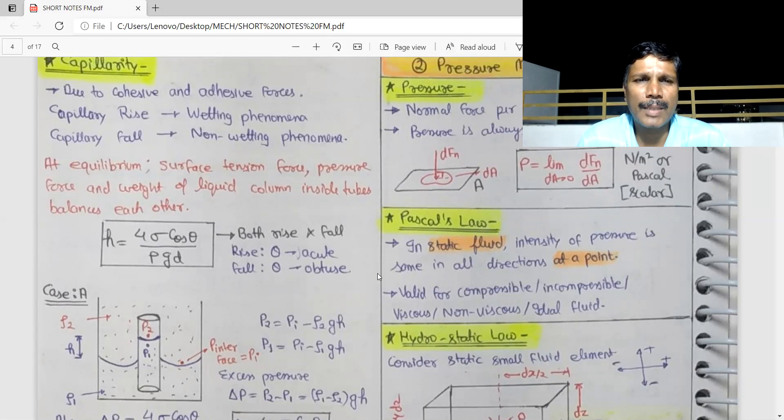My notes have equal value for this. Therefore, resistance will be created to equilibrium condition, which is nothing but surface tension force, pressure force, and weight of liquid. Column inside tubes balance each other at equilibrium. That's the equilibrium condition. Surface tension force, pressure force, and weight.